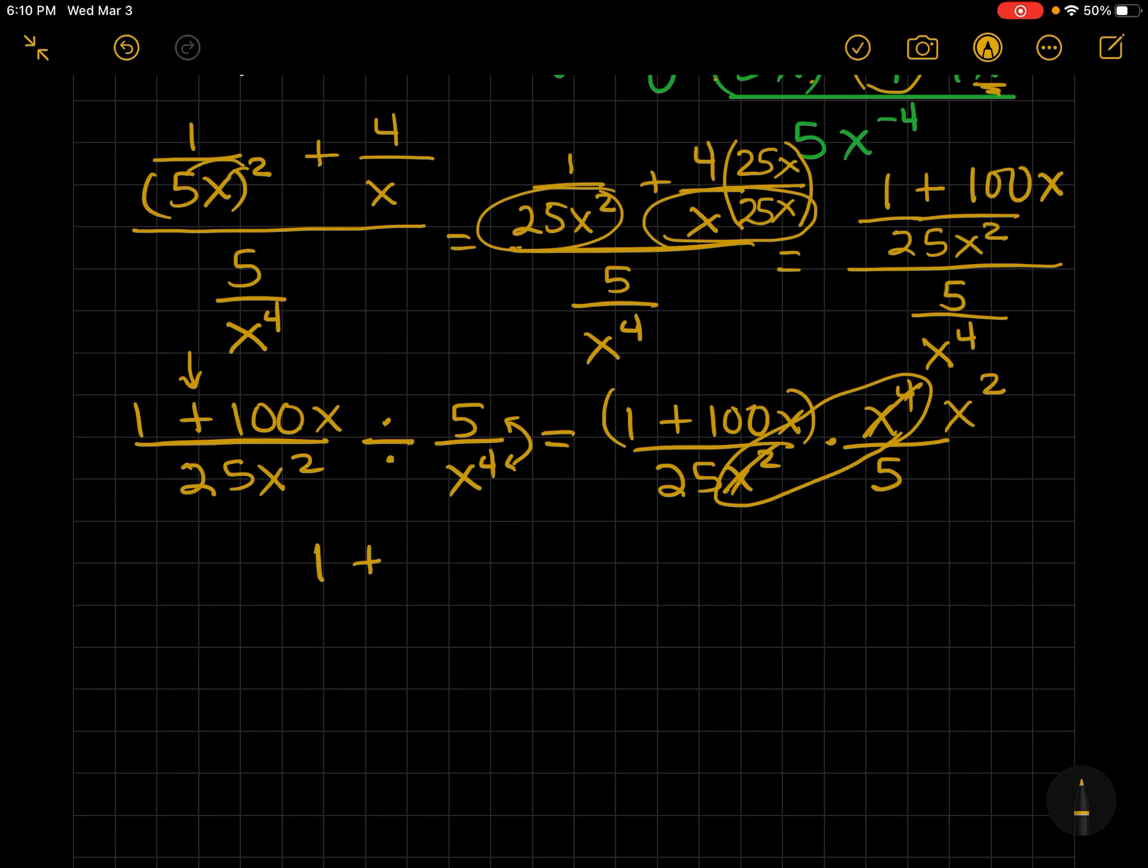And so, it appears that my final answer is 1 plus 100x times x squared. I like x squared out here. Over, 25 times 5 is 125. I don't see anything else that I can do to that fraction.